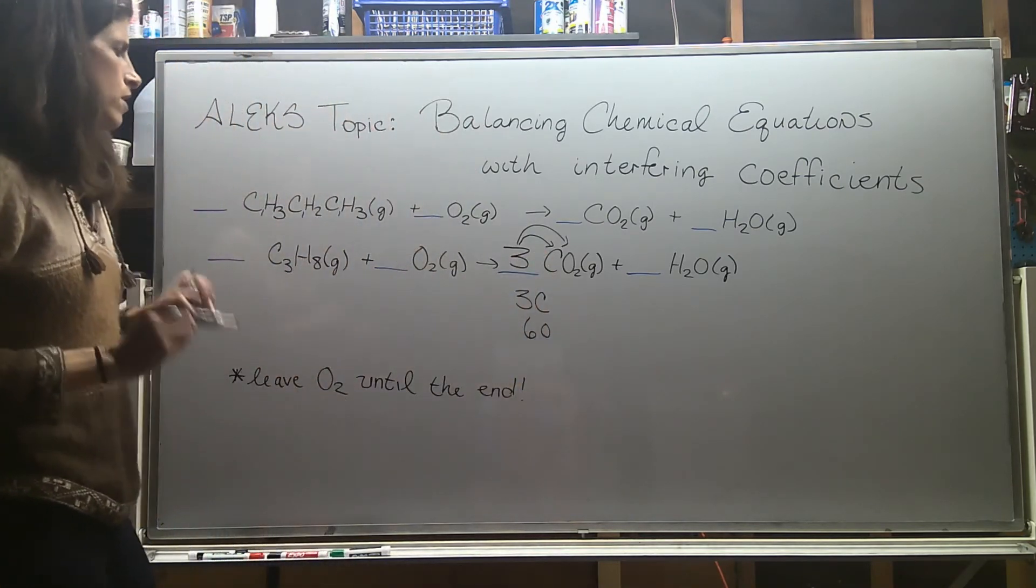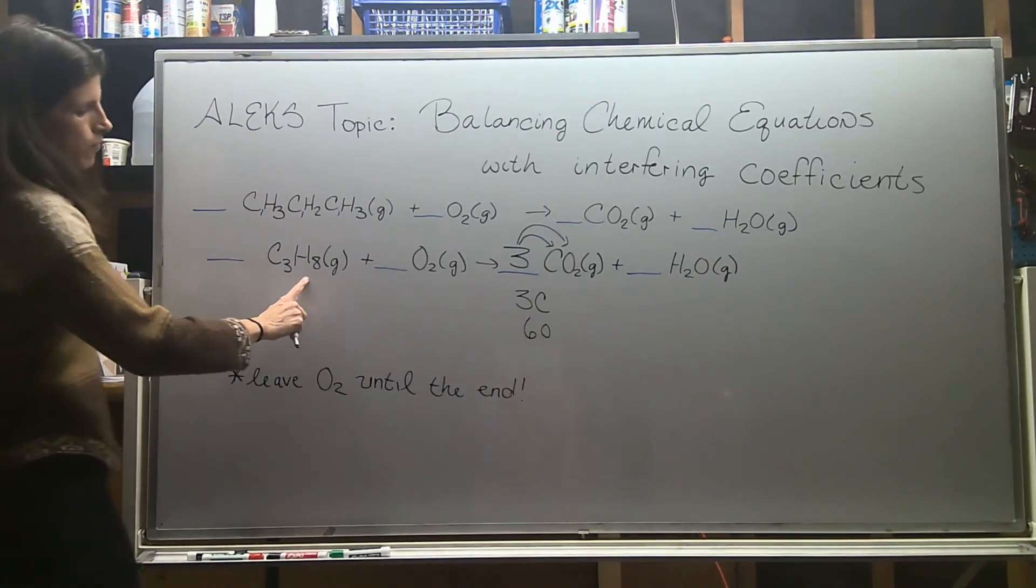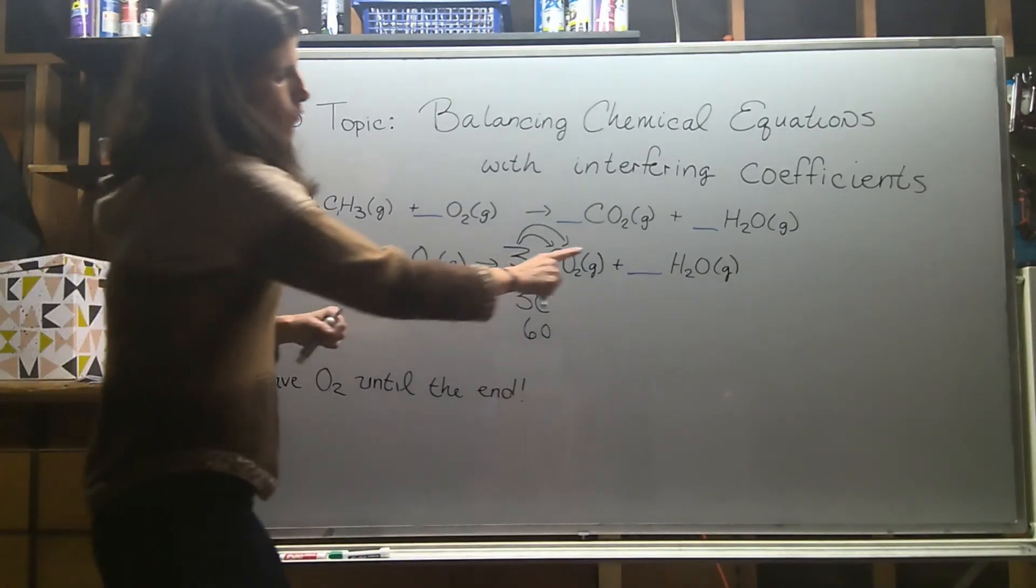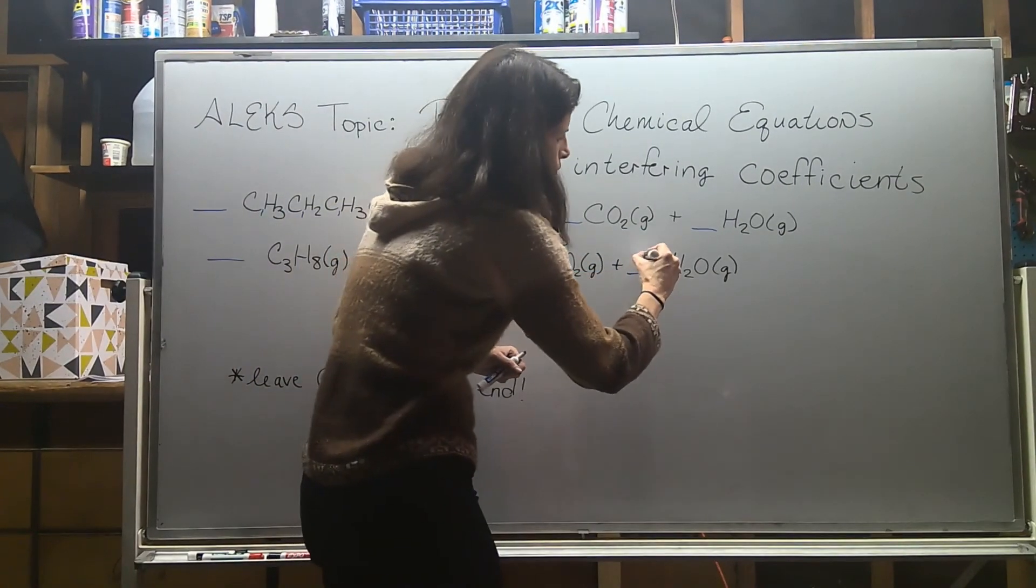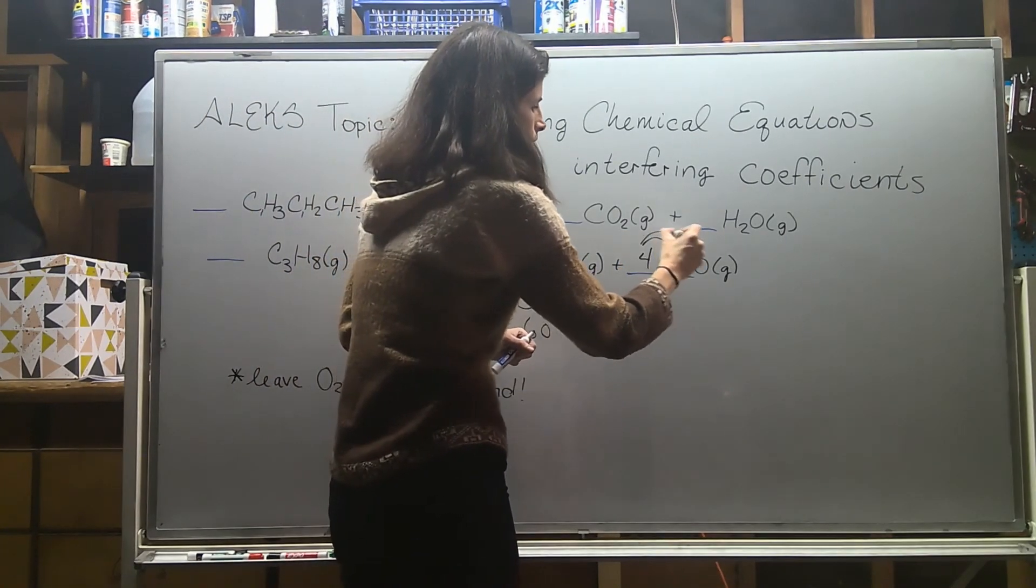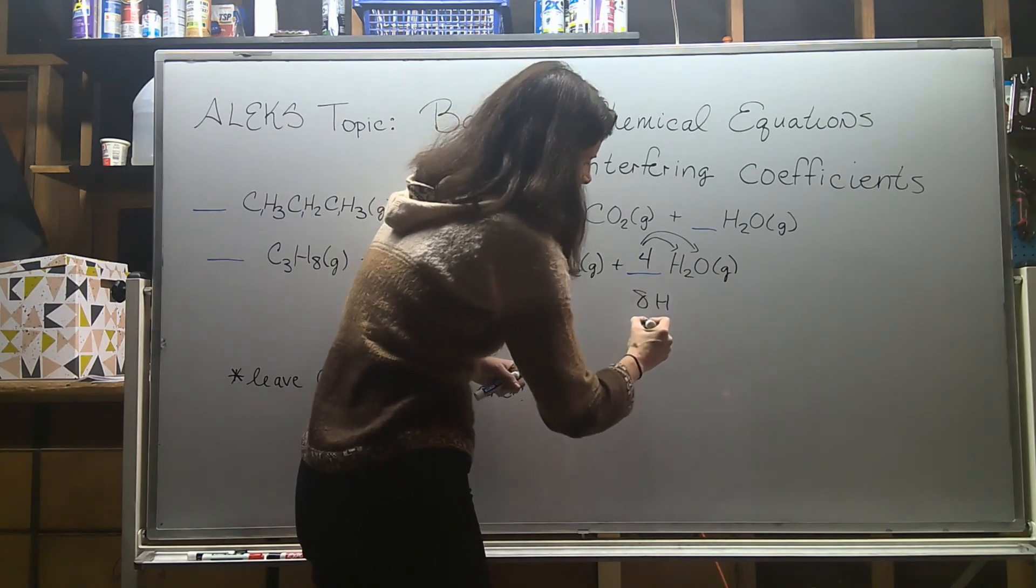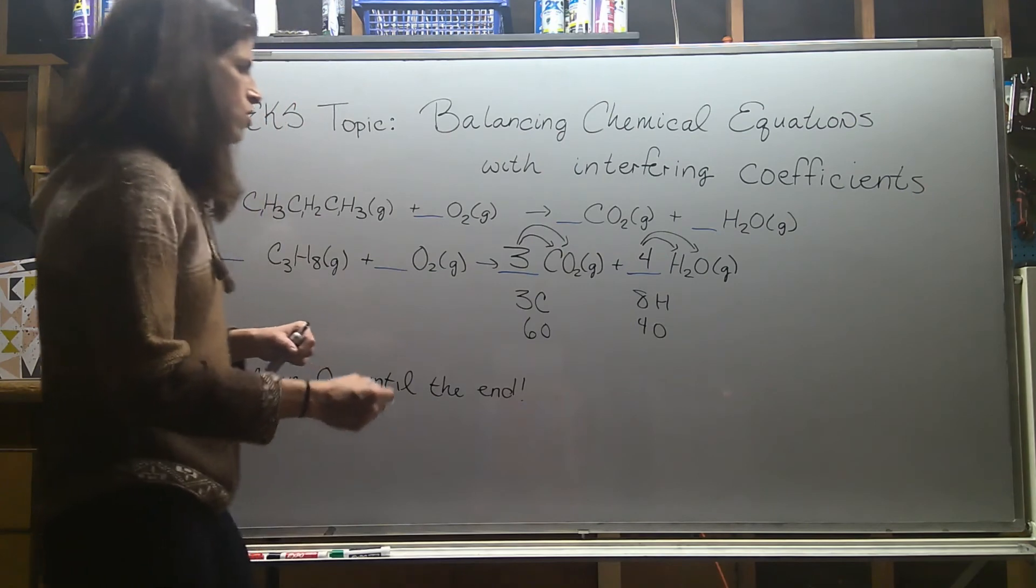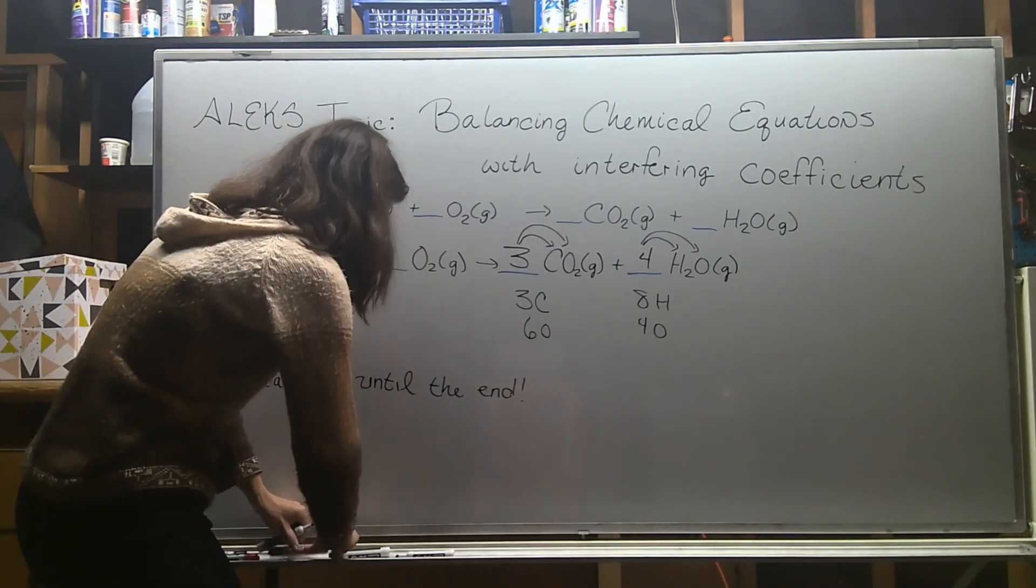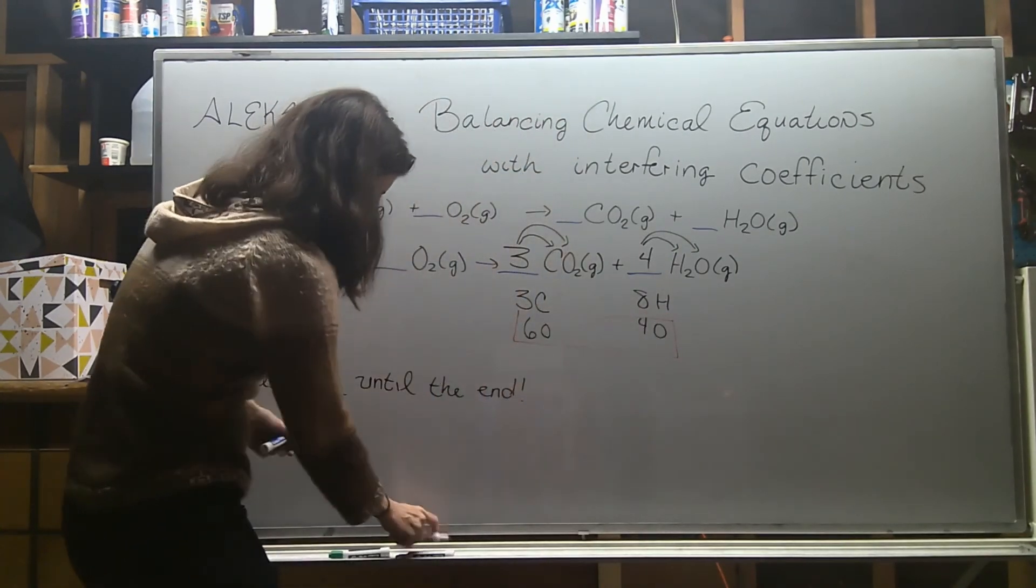Let me do the hydrogen next. So looking at my fuel, I have eight hydrogens, and then I have water over here. So if I put a four in front of that water, that's going to give me the eight hydrogens that I need on this side. Now I have eight hydrogens and four oxygens. Adding up all the oxygens on this side gives me a total of ten oxygens.